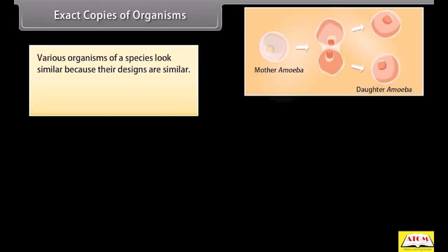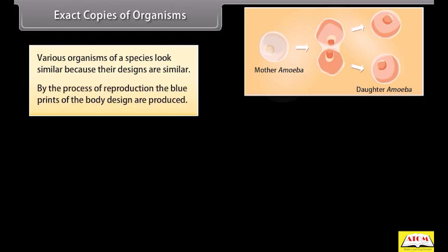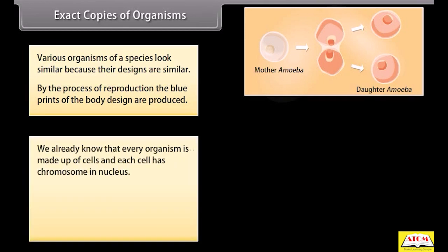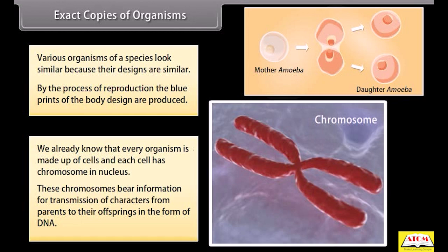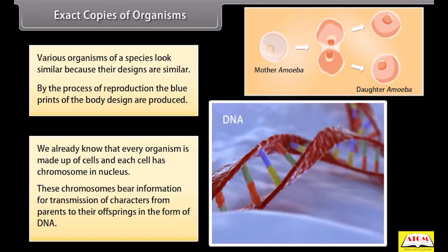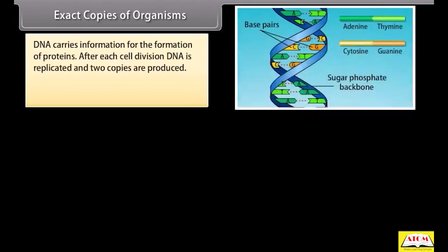Various organisms of a species look similar because their designs are similar. By the process of reproduction, the blueprints of body design are produced. Every organism is made up of cells, and each cell has chromosomes in the nucleus. These chromosomes bear information for transmission of characters from parents to their offspring in the form of DNA. DNA carries information for the formation of proteins. After each cell division, DNA is replicated and two copies are produced.